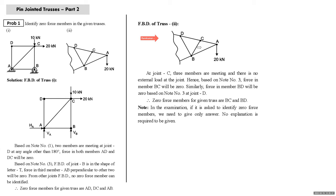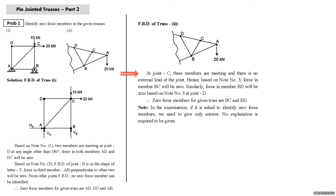For the second truss — which is a part of a truss with no reactions shown — at joint C, three members are meeting, no external load, two are in one line, so force in member CD will be zero by Note Number Two. At joint D, three members are meeting, two are in one line, so force in member DB will be zero. Therefore, zero force members in this truss are BC and BD. In an examination, simply give the answer — no explanation is required.